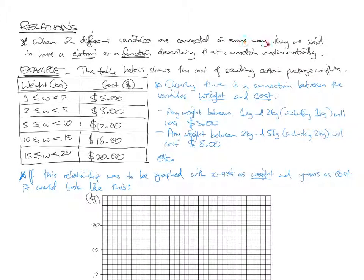So when two different variables are connected in some way, they're said to have a relation, or a relationship, or a function. We're going to get to the idea of functions later. A relation or a function describes the connection between those two variables mathematically. Let's have a look at an example, because these are pretty tricky ideas to start off with.